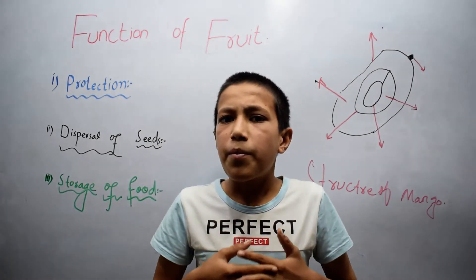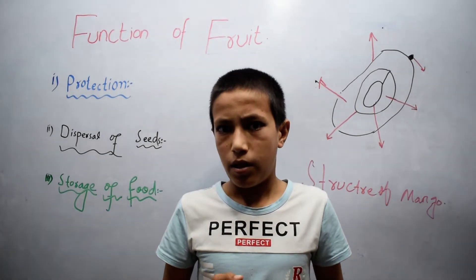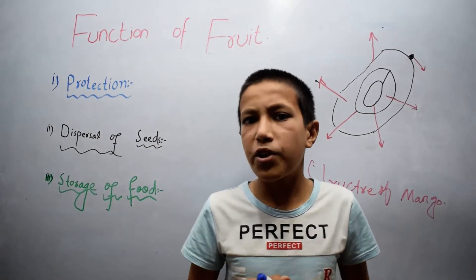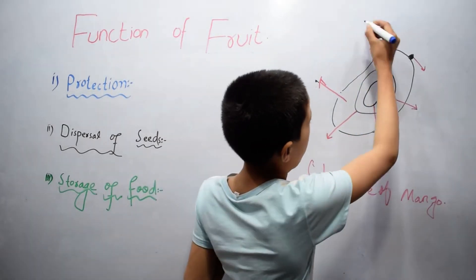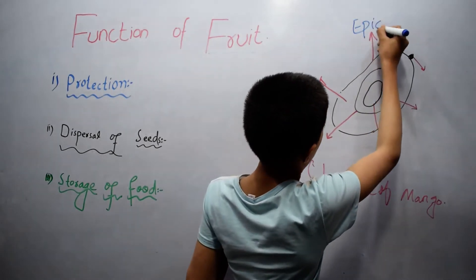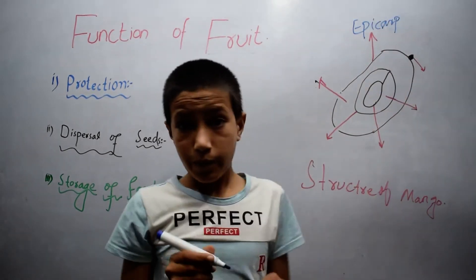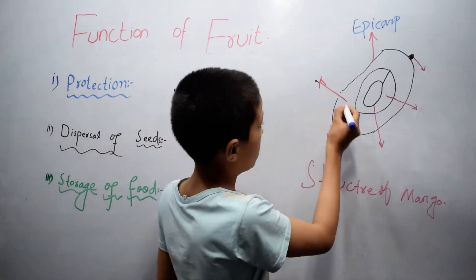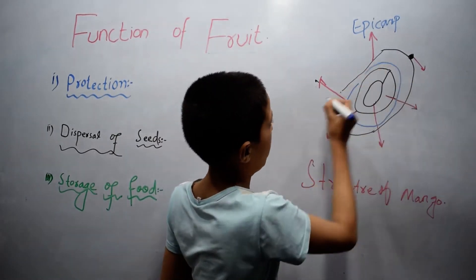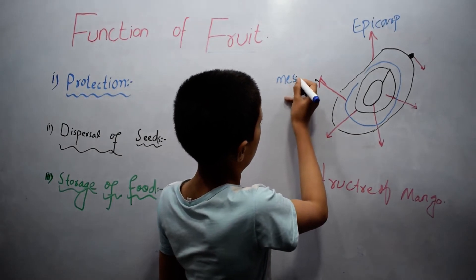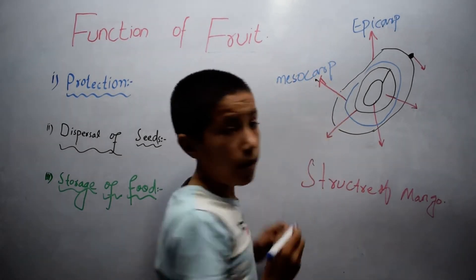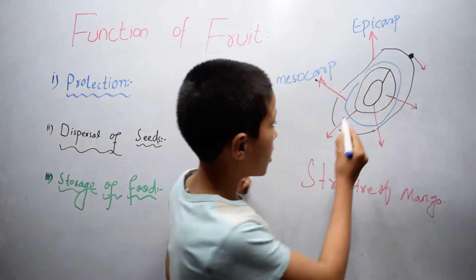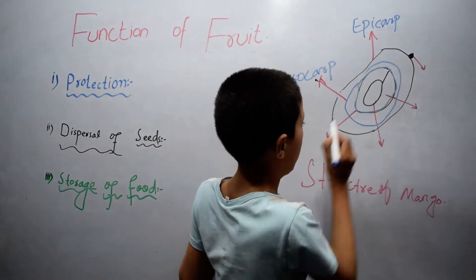The pericarp may or may not differentiate into three layers. The outer skin of the fruit is called the epicarp. The middle of the fruit is called the mesocarp. And the inner part of the fruit is called the endocarp.